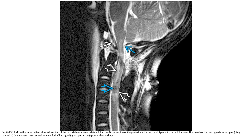MRI in the same patient shows disruption of the tectorial membrane and transection of the posterior atlanto-occipital ligament. The spinal cord demonstrates hyperintense signal as well as foci of low signal.